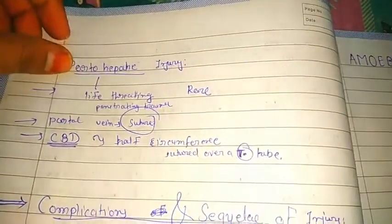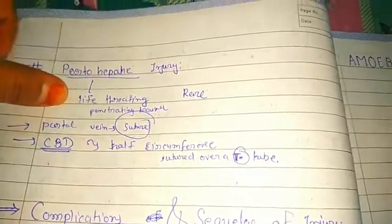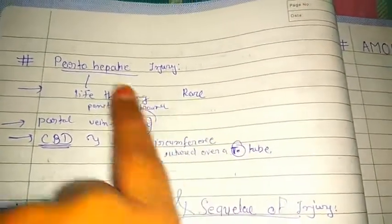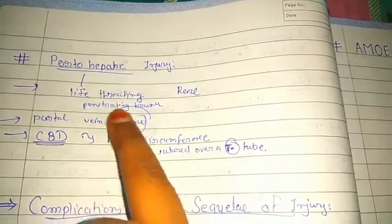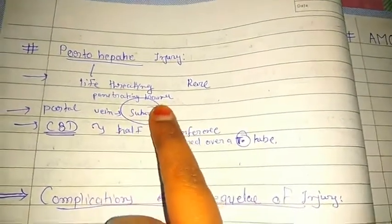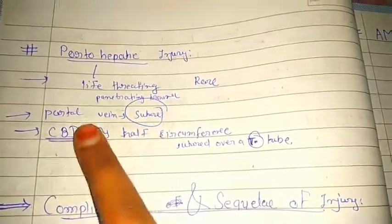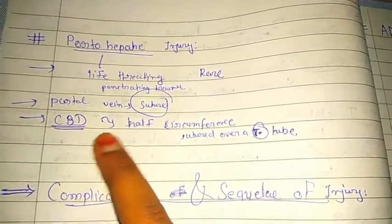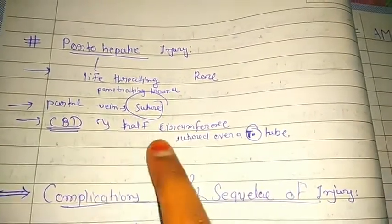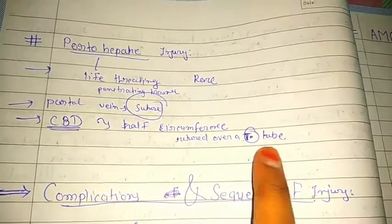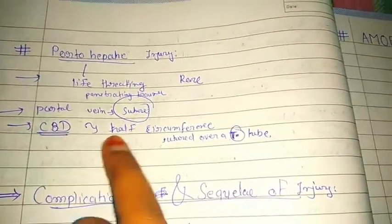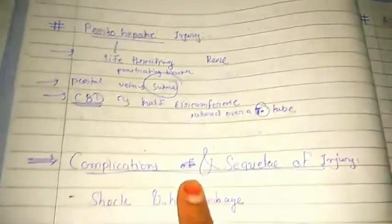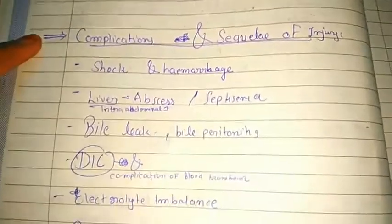If portohepatic injury is present, it is very life-threatening but rare — mainly occurring in penetrating trauma. The portal vein should be sutured and the common bile duct should be sutured over a T-tube for half its circumference.